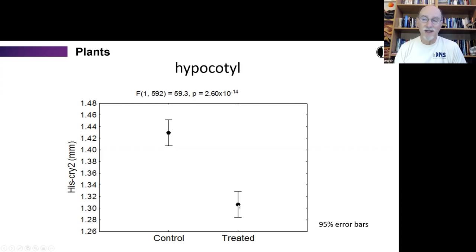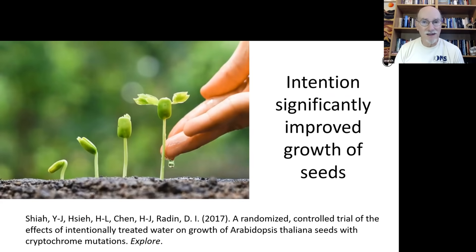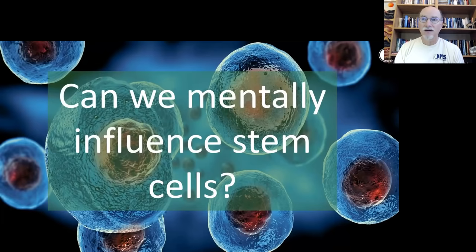So this is the result. The short fat hypocotyl was indeed in the treated condition. Again, 95% error bars, whopping difference statistically. In terms of absolute difference, it was only a matter of a couple of millimeters, but it was consistent enough that you're able to see in this case, the probability of 10 to the minus 14th, that the control and treated hypocotyls were actually different. So intention significantly improved the growth of seeds by blessing water that was used to grow some of the seeds.